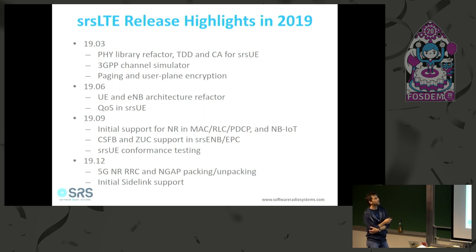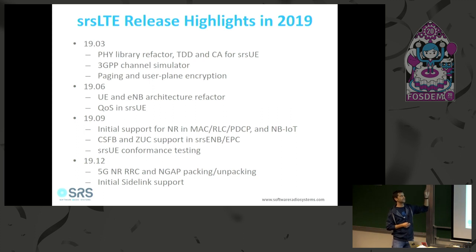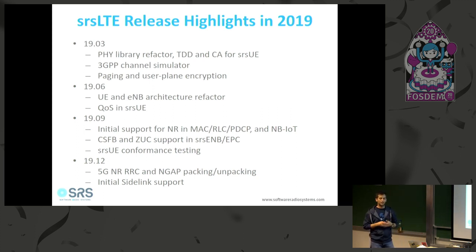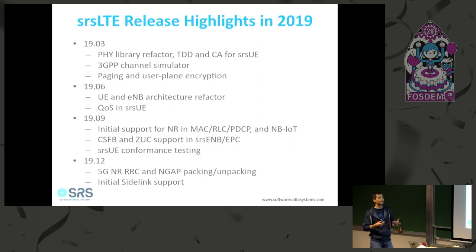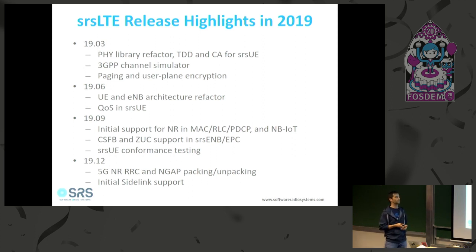We added paging and user plane encryption to the eNodeB and the EPC. In releases 19.06 and 19.09 we refactored a big portion of our protocol stack to make it scalable for all the development we were planning — not many new features in those releases, but we focused on preparing it.